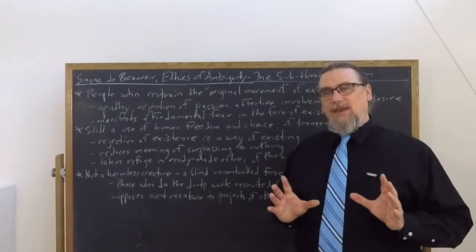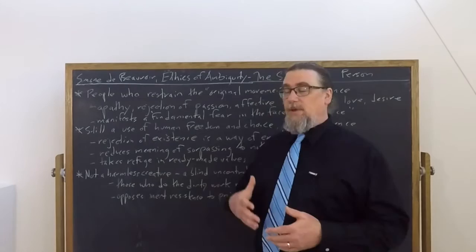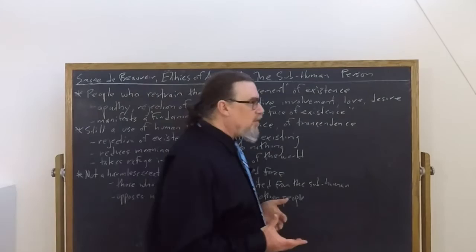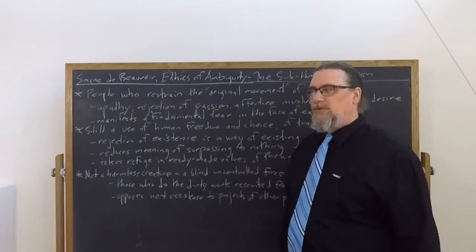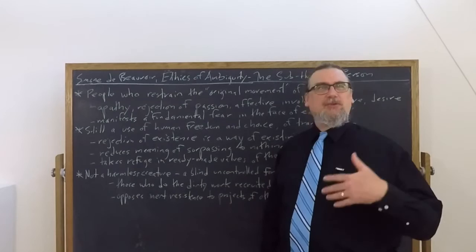And so because of this, she says, they choose to take refuge in ready-made values, in values that are just being supplied from someone else. It could be the culture, a political party or platform, an ideology, a religion, whatever you like. They take refuge in these values. They don't do it in the way that the next type of person that she's going to talk about, the serious person, does so. There's a bit more of an adventitiousness to this. It could be anything. But it allows them to have cliches that they use to express themselves.